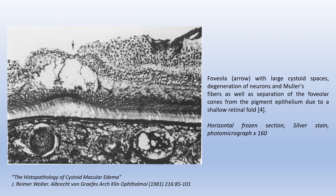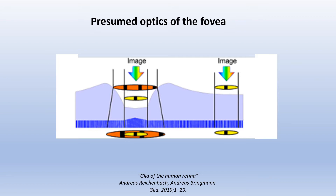This is a case of cystoid edema, and here you can see a beautiful horizontal section through the foveolar region that reveals the virtual absence of the inner limiting membrane, large empty cystoid spaces, degeneration of neurons and Müller fibers, as well as the separation of the foveolar cones from the pigment epithelium due to a shallow retinal fold. The central foveola allows a short pathway of the image from the inner retinal surface to the central photoreceptors without light scattering at inner retinal layers. The central foveal walls may have an image-magnifying function, while the peripheral retina does not provide image magnification.